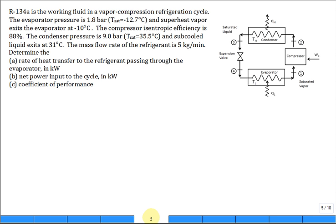We have refrigerant 134A as the working fluid in a vapor compression refrigeration cycle. The evaporator pressure is 1.8 bar at this pressure, and they tell us the corresponding saturation temperature of the refrigerant is negative 12.7 degrees C.